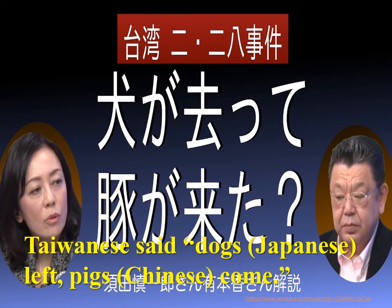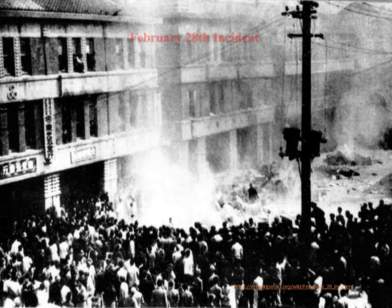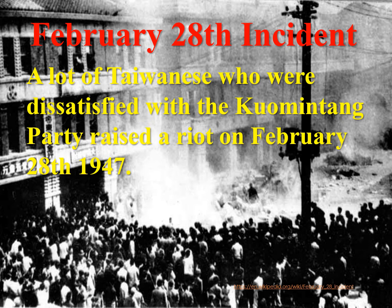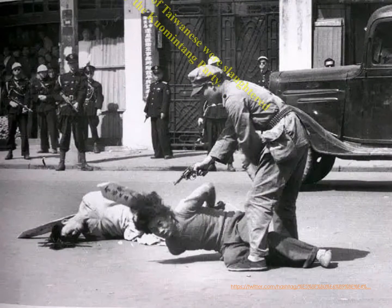Taiwanese said: 'Japanese left — Chinese dogs come, pigs.' This reflects dissatisfaction with the Kuomintang. A lot of Taiwanese who were dissatisfied with the Kuomintang raised a riot on February 28th, 1947. A lot of Taiwanese were slaughtered by the Kuomintang — this is known as the February 28th Incident.